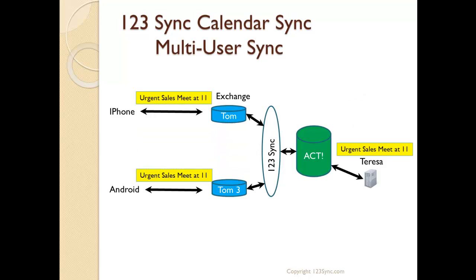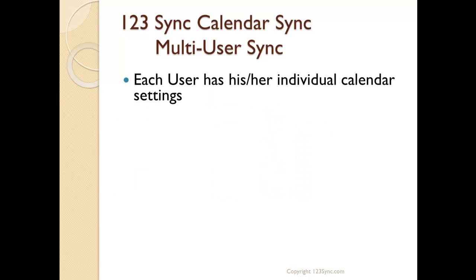What happens when users actually abstain themselves from the meetings? They do that by deleting the meeting from their calendar. So how does 123 Sync deal with all that, and how does 123 Sync portray that into the different activities in Exchange? For each user in 123 Sync, it has individual settings of calendars and folders that exist in Exchange.